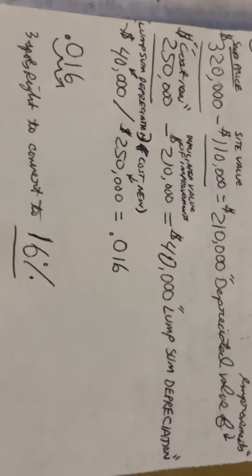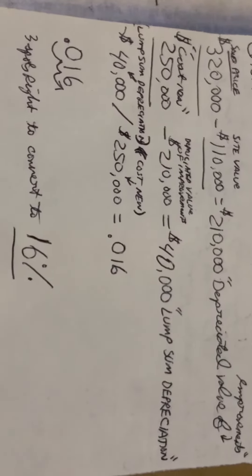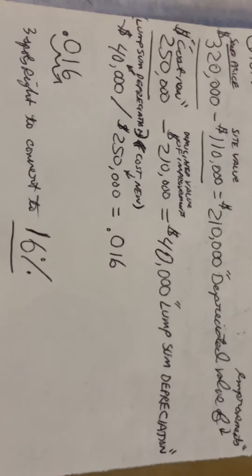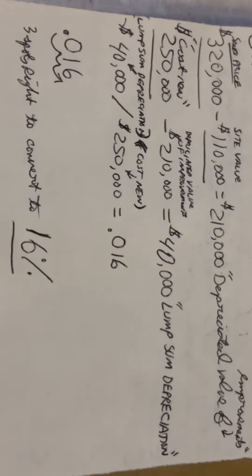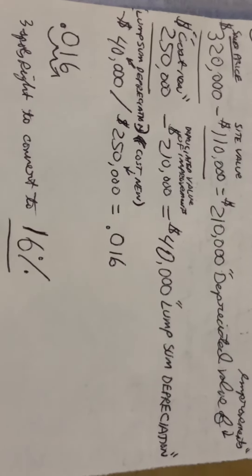Phase three, you take that lump sum depreciation that we just figured out, $40,000, and you're going to divide it by the cost new, which was $250,000. That equals 0.16.